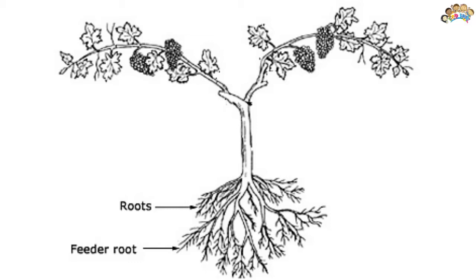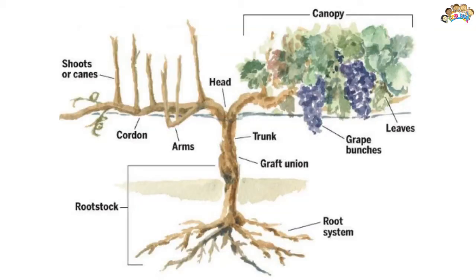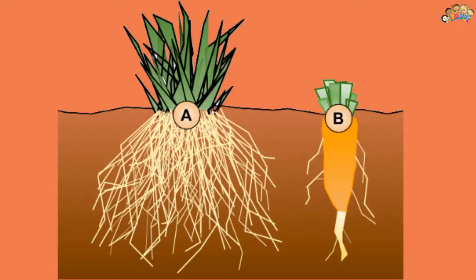The root differs from the stem mainly by lacking leaf scars and buds, having a root cap, and having branches that originate from internal tissue rather than from buds. The primary root, or radicle, is the first organ to appear when a seed germinates.